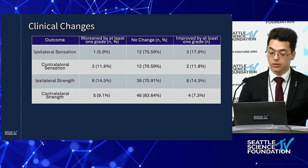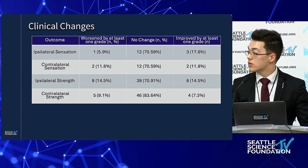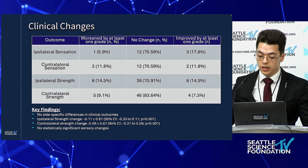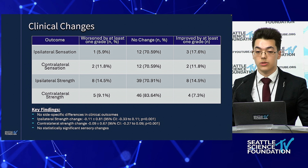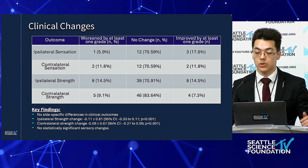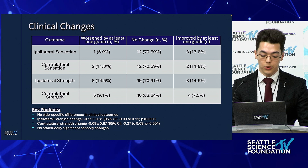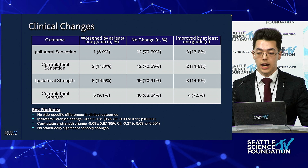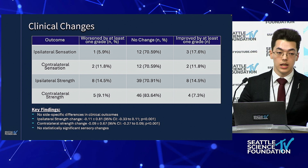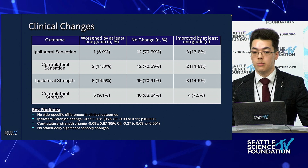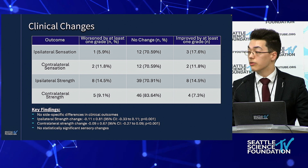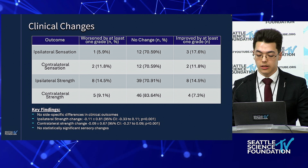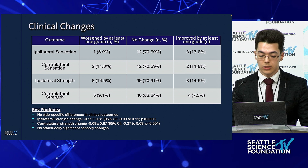Here are some statistics on clinical changes. Most patients had no change. The key takeaway is that there were no side-specific changes in clinical outcomes for weakness or numbness. There was a bilateral, very minor decrease in terms of strength — about 10% of a grade on the Oxford scale of zero to five — on both sides, and no statistically significant sensory changes.